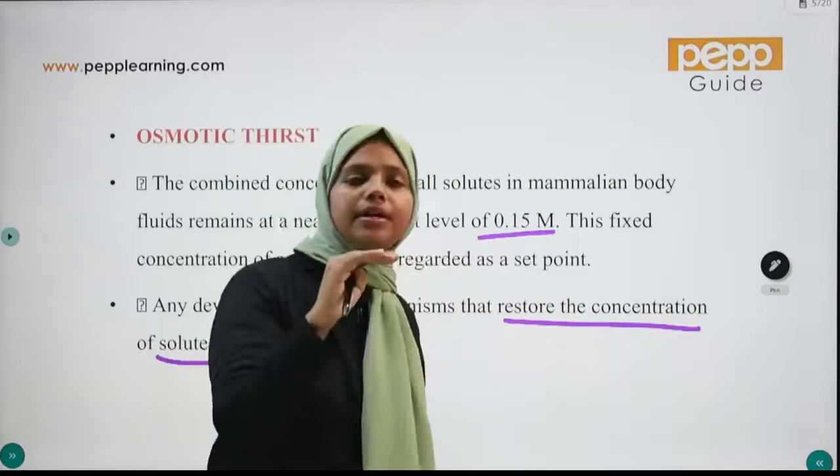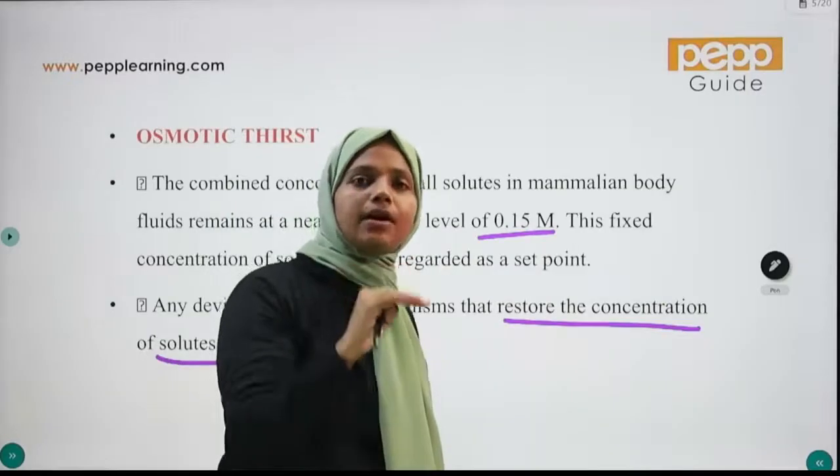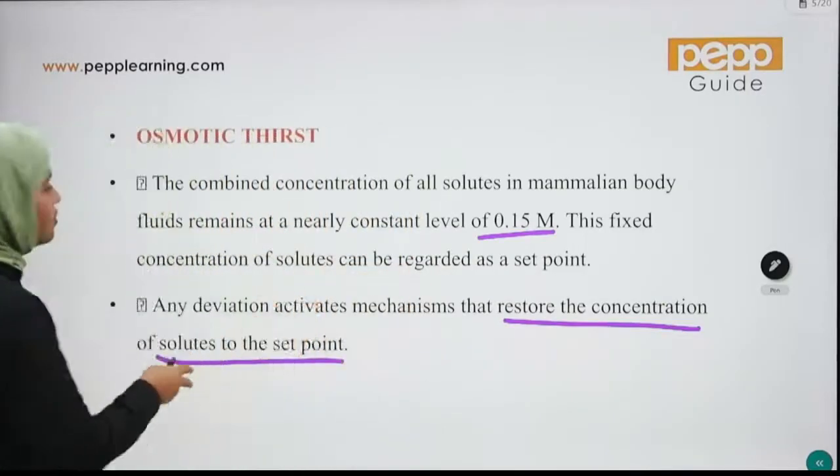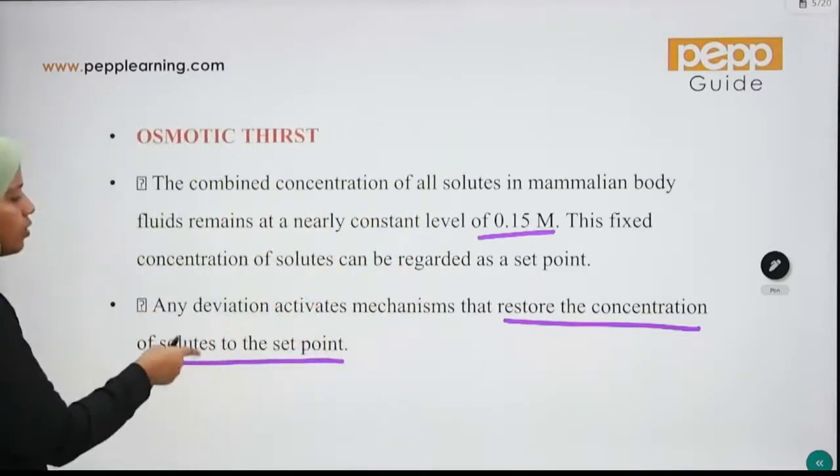In our body there is a set point. There is an ion-solute balance. Inside and outside the cell there is osmotic pressure across the semi-permeable membrane.